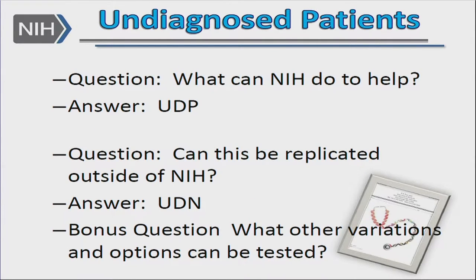So how did we get where we are? It all started with undiagnosed patients. Six to eight percent of the inquiries that our office used to get were from people who were still on their diagnostic odyssey. The question was, what can NIH do to help? The quick answer was the UDP, which was stood up in 2008. After a few years, when it was obvious that this was a sustainable program and there was a need in the community, the question became: can this be replicated outside of NIH? And the answer, or at least the way to figure out the answer, was the UDN.